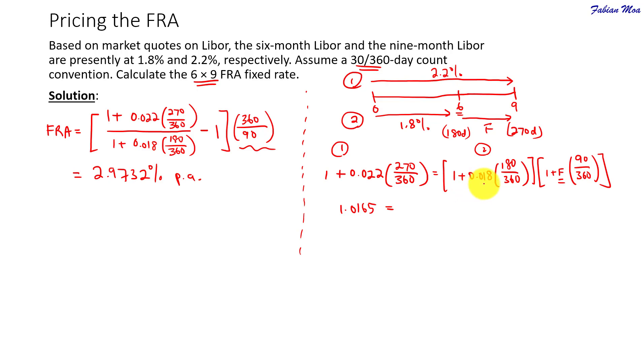So this portion, if you calculate 1 plus 0.018 times 180 over 360, that's 1.009. And then we multiply by the last term.